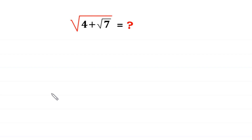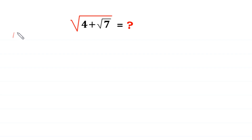Hello, welcome to how to solve this very nice square root algebra problem: the square root of 4 plus square root of 7. We will solve it by two methods. Let's start with method 1.